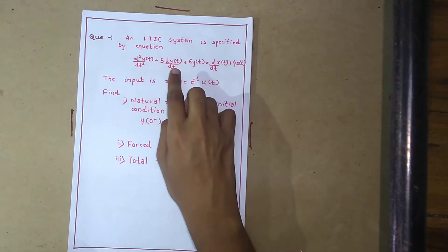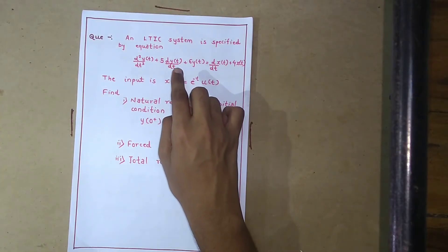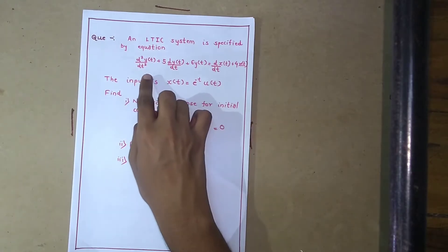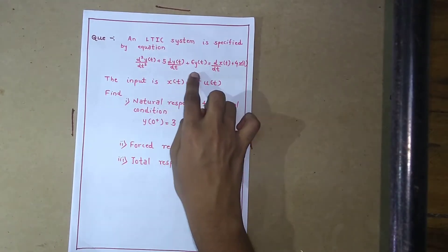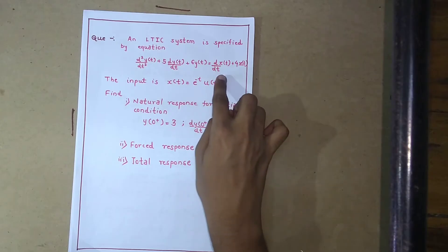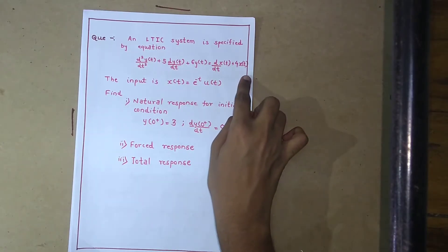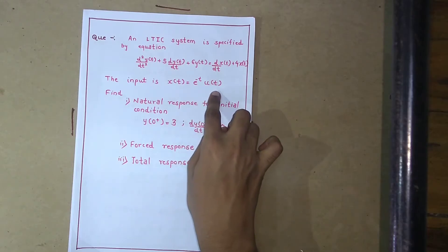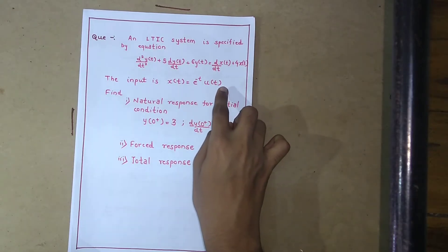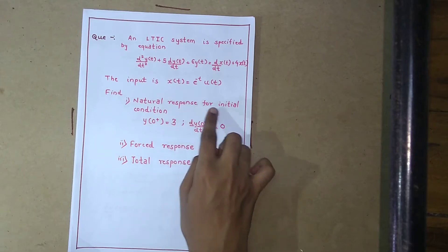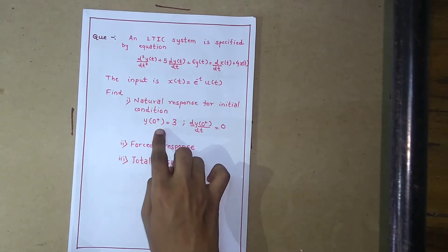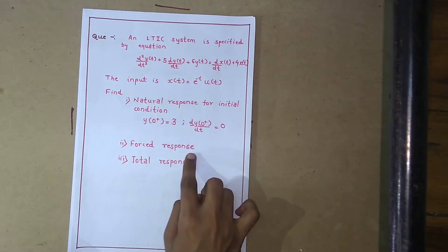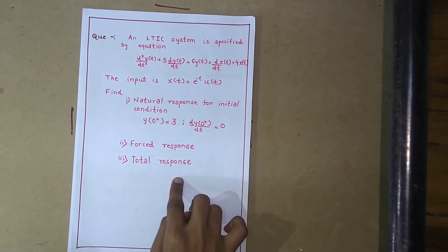Here is the question. A linear time invariant continuous system is specified by the equation d²y/dt² + 5 dy/dt + 6y(t) = d/dt of x(t) + 4·x(t), where the input x(t) is defined as e^(−t)·u(t), where u(t) is a unit step function. We need to find the natural response for initial conditions y(0) = 3 and dy/dt(0) = 0, the forced response, and the total response for the system.